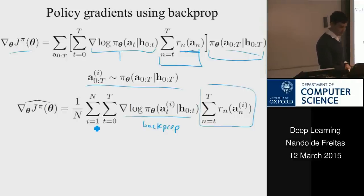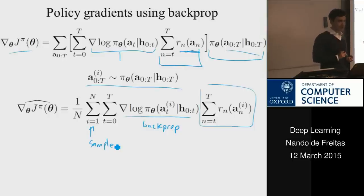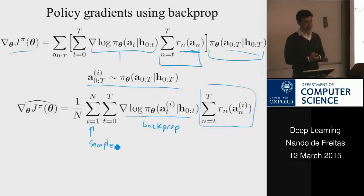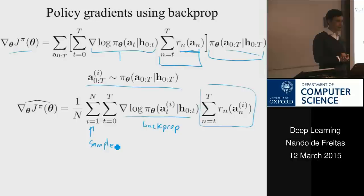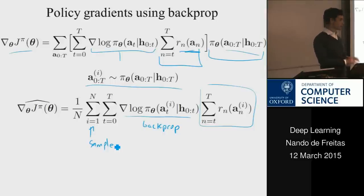This is precisely the algorithm that the recurrent networks reading street numbers are using, outperforming ConvNets. You can use this to fly an aircraft or helicopter — there was an impressive demo by Peter Abbeel and Andrew Ng flying helicopters upside down using exactly this model, this trick, this equation.